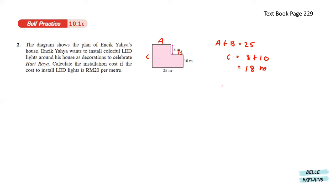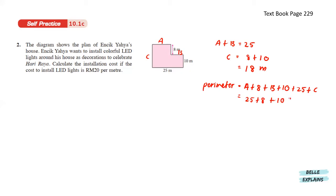Now we already know the length of every part. We can find the perimeter. The perimeter equals to A plus 8 plus B plus 10 plus 25 plus 18. That gives us the perimeter at 86 meters.